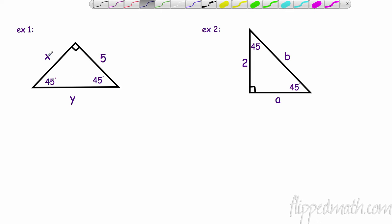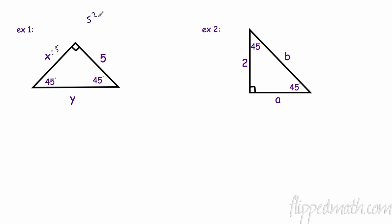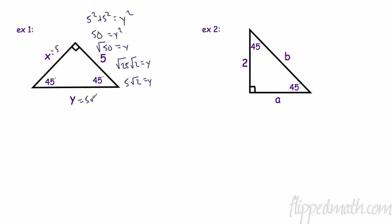Since it's isosceles, these two legs are the same, so a² + b² = c². We have 25 + 25 = 50, so y² = 50. Take the square root of 50 — remember we only take the positive because we have a distance. That's √(25 × 2), and √25 = 5, so this is 5√2.